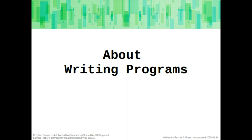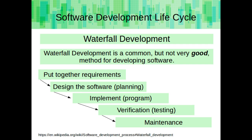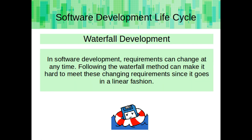Now a bit about writing software and techniques to use for your programming assignments. There are different approaches to software development to minimize mistakes made during development and to make it easier to modify and maintain software. The waterfall development methodology is a common, but not very good method for developing software. It includes a very linear development process, going from requirements to planning to programming to testing. In software development, requirements can change at any time, and following the waterfall method can make it hard to meet these changing requirements. It can also encourage messy code if there isn't time taken to test regularly, reassess requirements, and learn from the progress made prior.